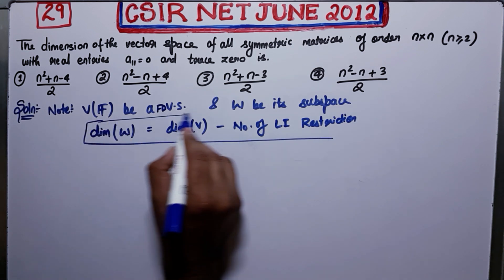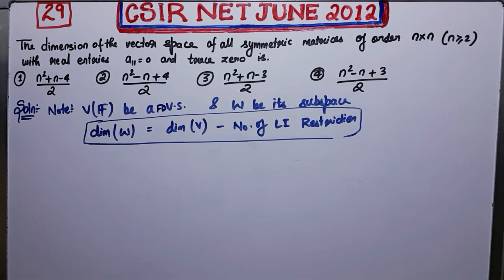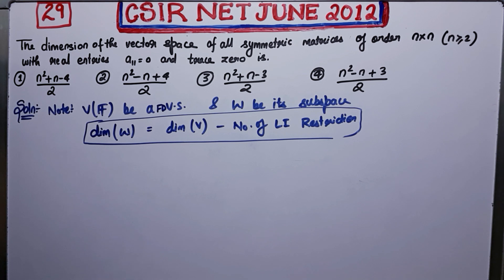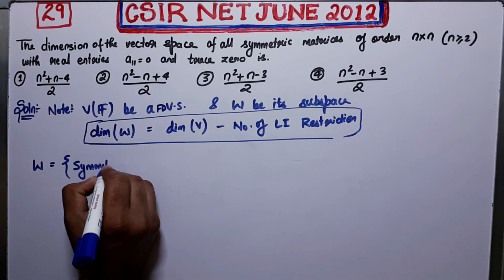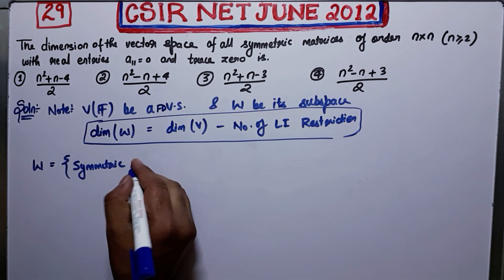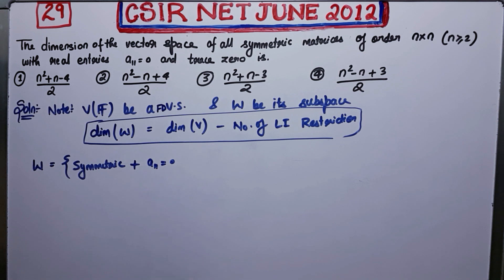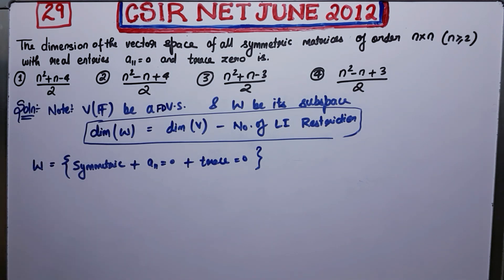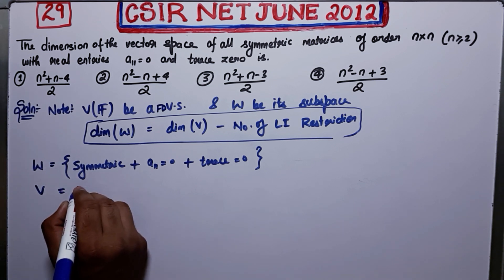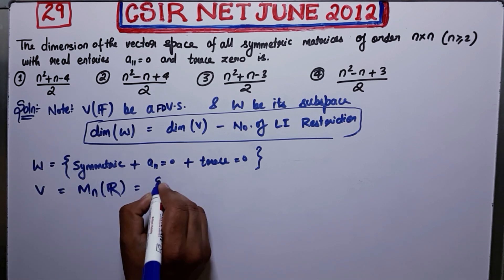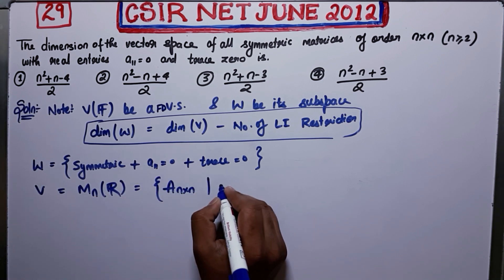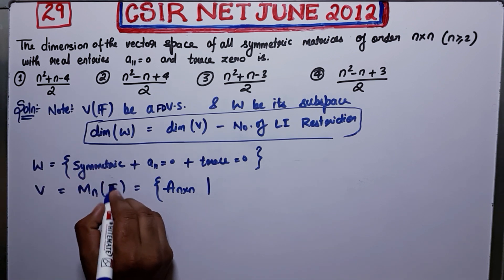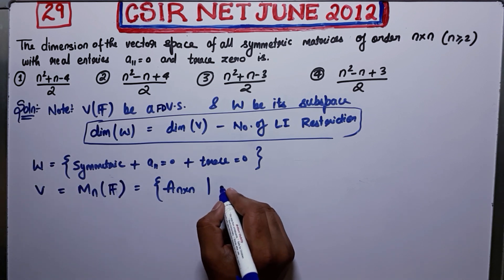We want the dimension of the vector space of all symmetric matrices satisfying those conditions. We define W as the subspace consisting of all symmetric matrices with a₁₁=0 and trace=0. We take V to be M_n(ℝ), the set of all n×n matrices over the field ℝ.